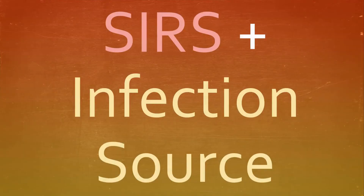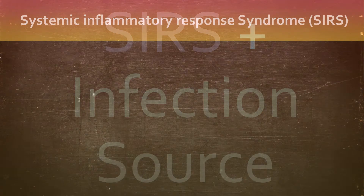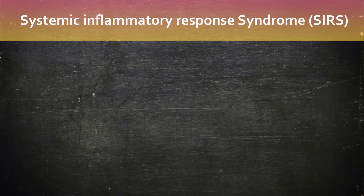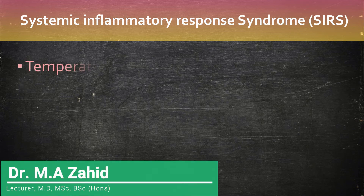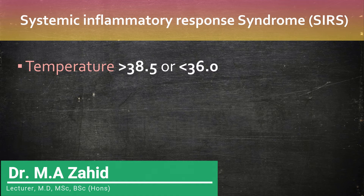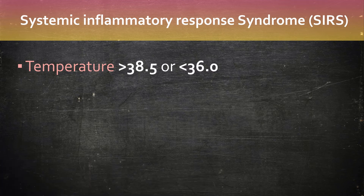To diagnose sepsis you need two things: SIRS and a source of infection. What is SIRS? This is known as systemic inflammatory response syndrome and it consists of the following criteria.